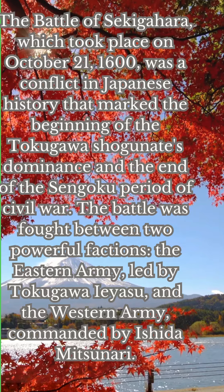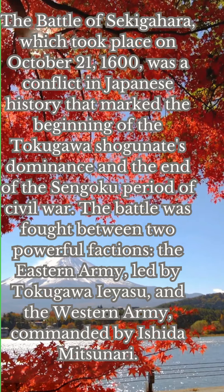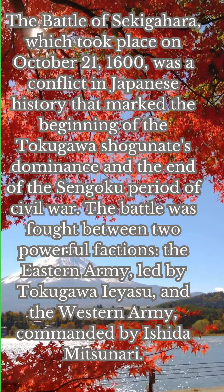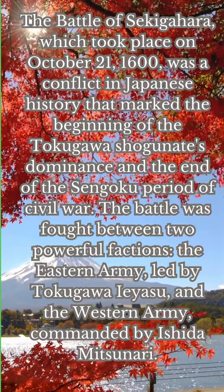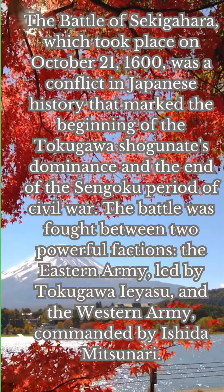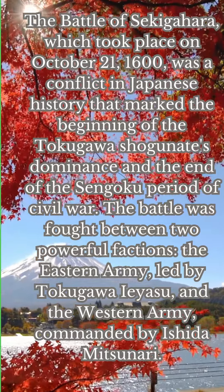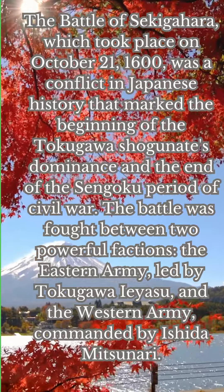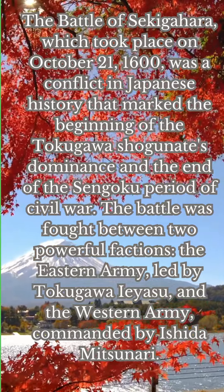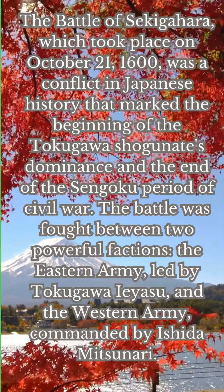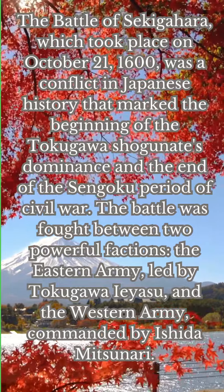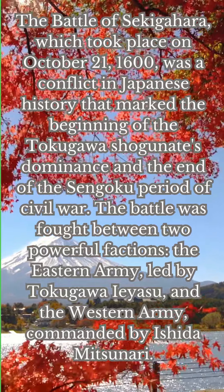The Battle of Sekigahara, which took place on October 21, 1600, was a conflict in Japanese history that marked the beginning of the Tokugawa shogunate's dominance and the end of the Sengo period of civil war.